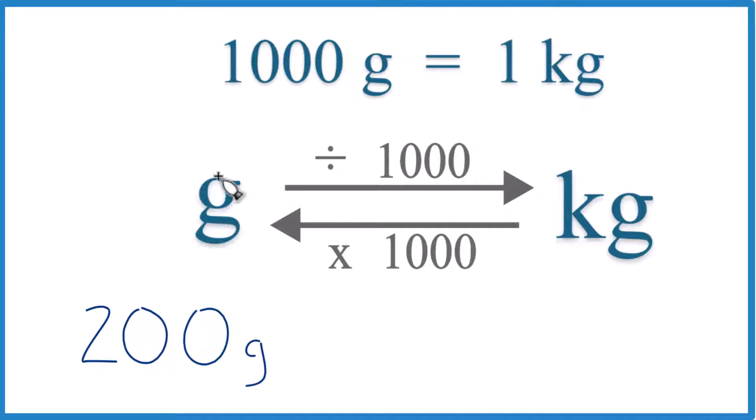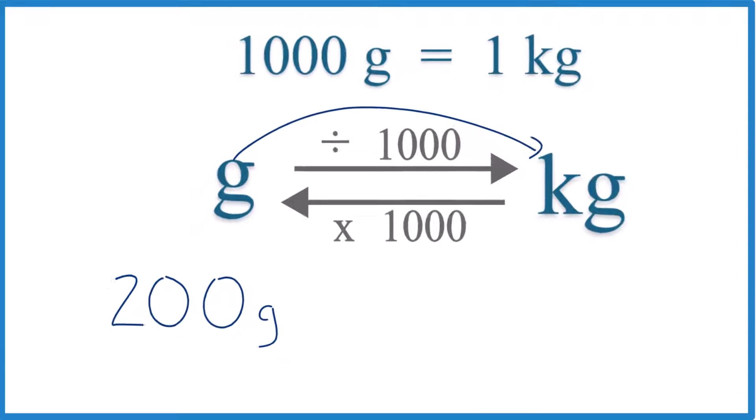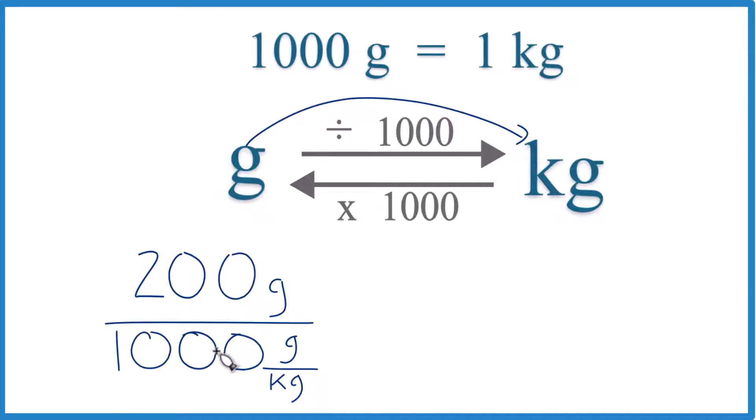So when we go from grams to kilograms, we divide by 1,000, like this. And note, 1,000 grams in one kilogram. That's the conversion factor again.